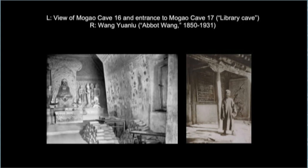Cave 16 has an altar on top of which are Buddhist icons modeled out of clay. In many caves, the original statues were destroyed and replaced with reconstructed images dating from the Qing Dynasty. I want to draw attention to a small doorway on the right side in the corridor leading to the main chamber of Cave 16, numbered 17 — the so-called Dunhuang Library Cave. It was in this cave that over 60,000 manuscripts and portable paintings were sealed up sometime in the early 11th century.